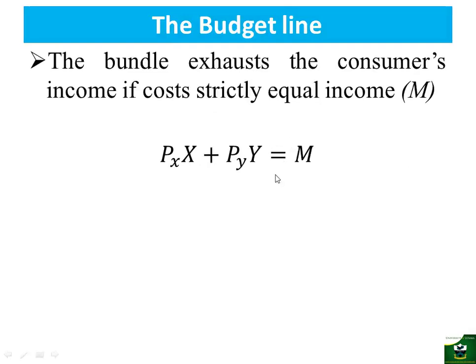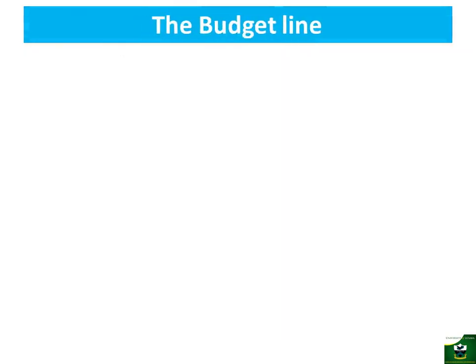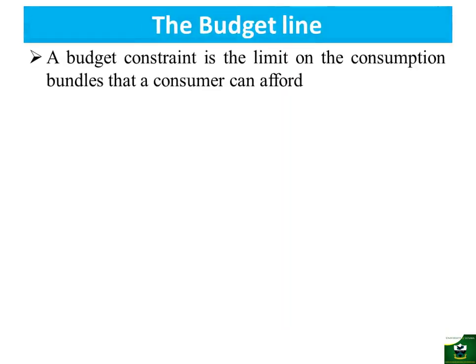From an inequality, we change to an equation to show that the consumer should exhaust his entire income on buying good X and good Y. Given the two equations — one with an inequality sign and one with an equation — we have what we call the consumer's budget constraint. It is a constraint to the consumer that whatever he is buying should be less or equal to the income, and this identifies how far the consumer can go in the purchase. A budget constraint is the limit on the consumer's budget that a consumer can afford.